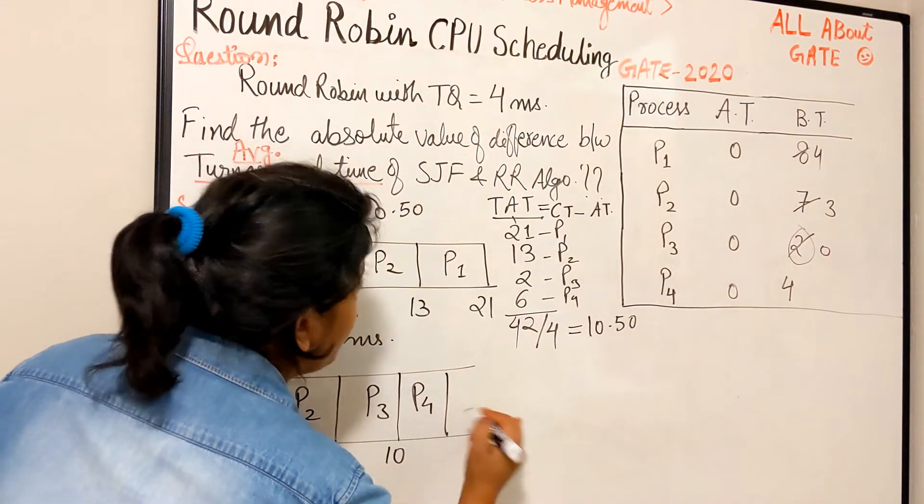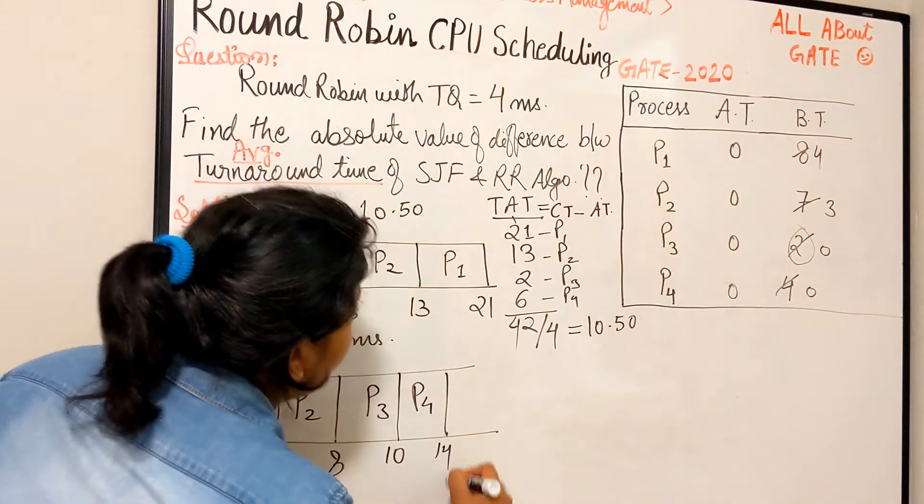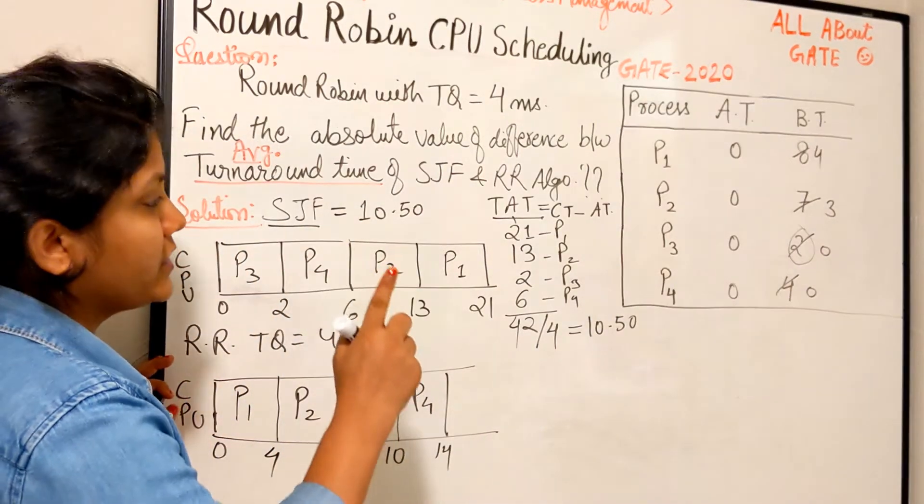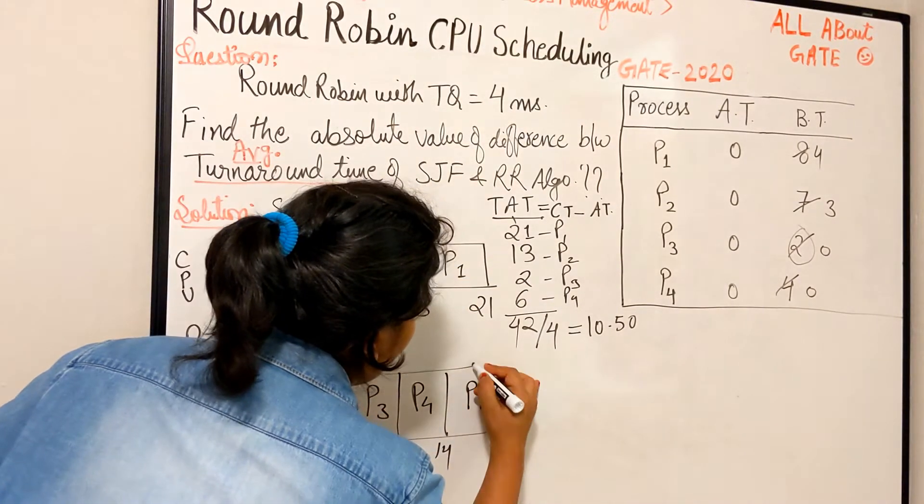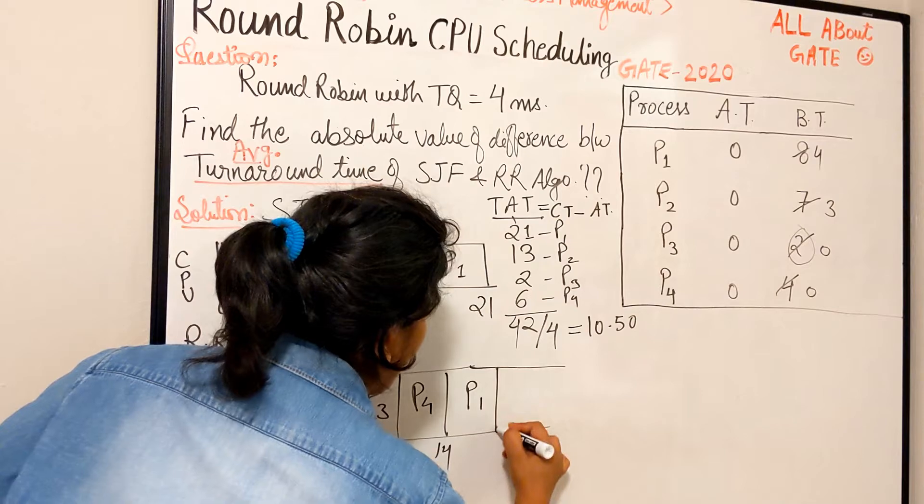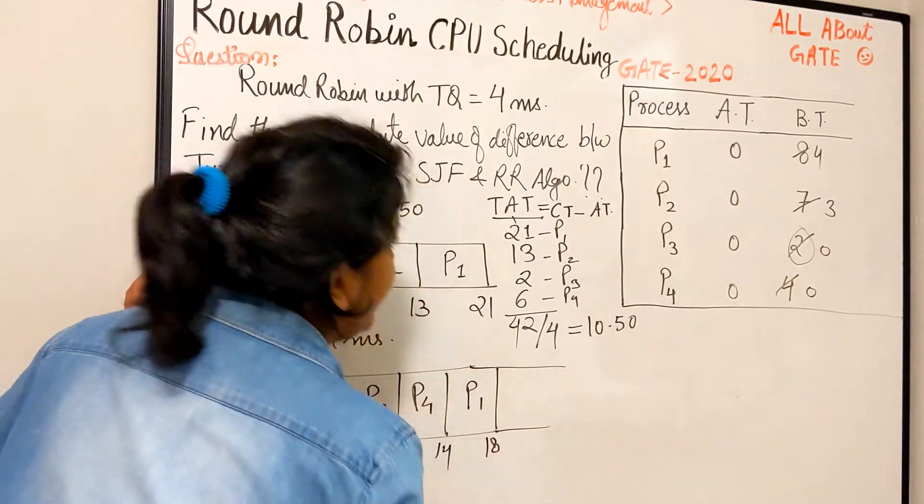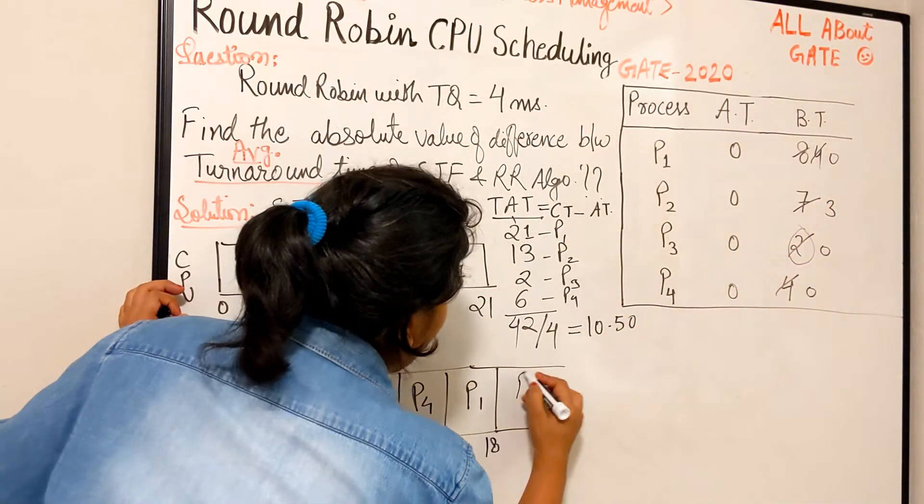Next comes P4, needs only one quantum, so 14 and it becomes 0. Now we're left with only 2 processes, P1 and P2, so we take P1 first. It needs 4 more, so 14 plus 4 equals 18, done, becomes 0. Last is P2, which needs 3, so 18 plus 3 equals 21.